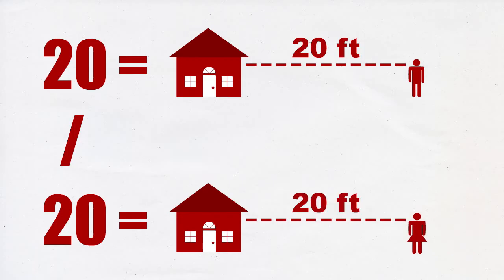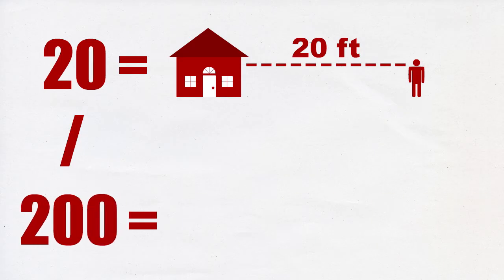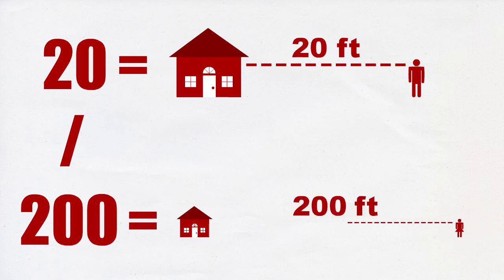The numbers change as your vision gets better or worse. For example, you're considered legally blind when you have 20/200 vision, meaning you can see something 20 feet away that a normal person can see 200 feet away.